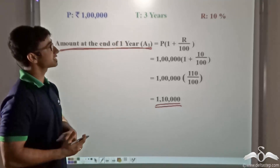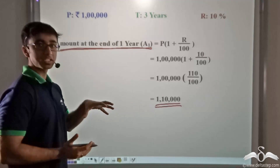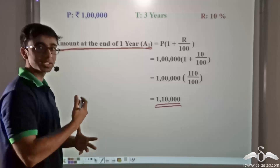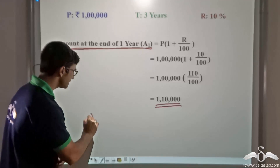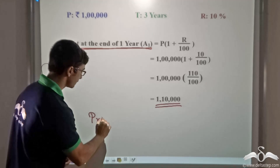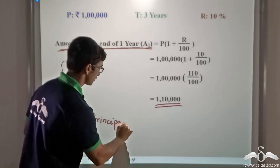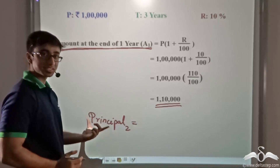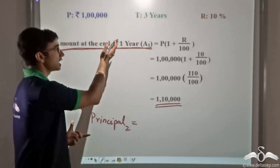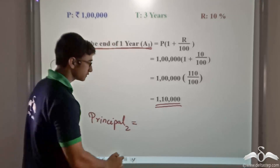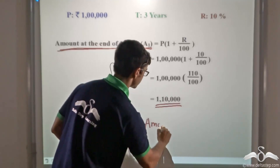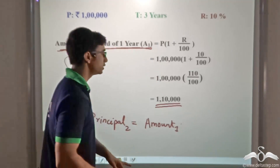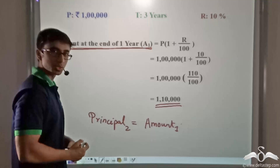But such is not the case — Sudhir has invested his money for 3 years, so this process will continue. The principal for the second year will be nothing but the amount at the end of the first year, that is equal to rupees 1 lakh 10,000.